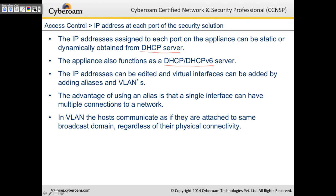IP addresses can be edited and virtual interfaces added by adding aliases and VLANs. The advantage of an alias is that a single interface can have multiple connections to a network — for example, binding a pool of five public IP addresses from your ISP on the WAN interface to host different servers on different public IPs. In VLAN, hosts communicate as if attached to the same broadcast domain regardless of physical connectivity. CyberROM can act as an inter-VLAN router.